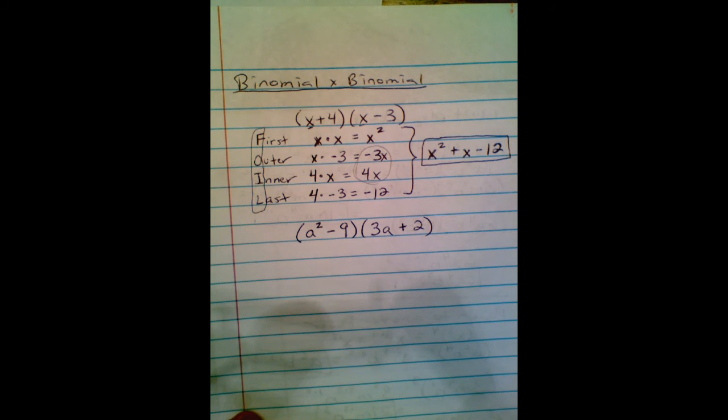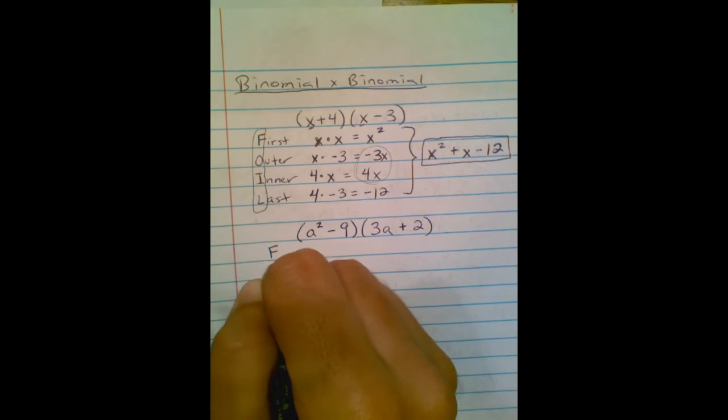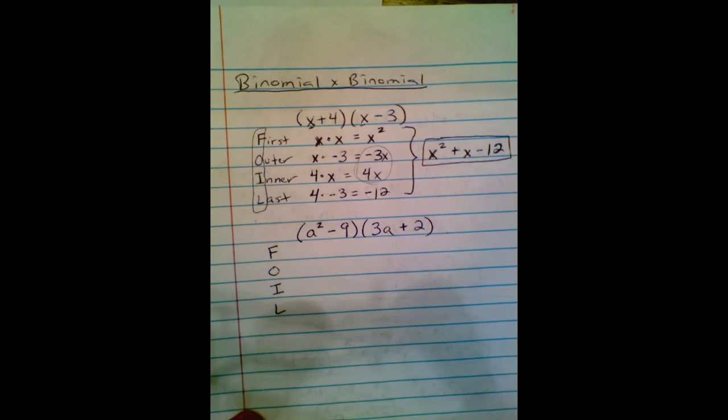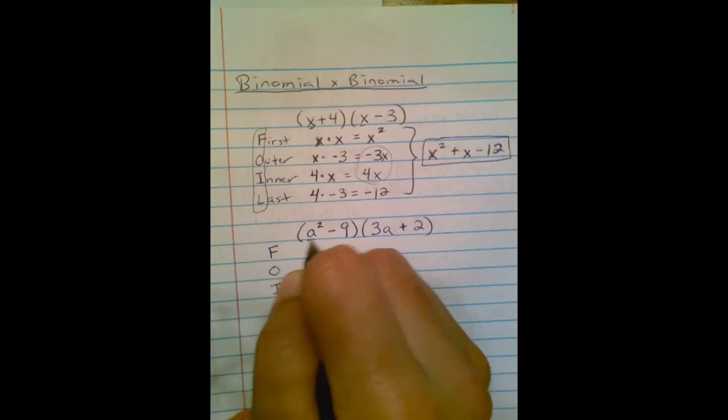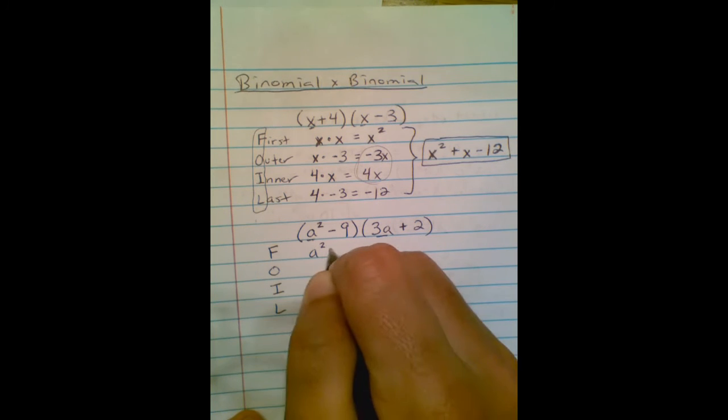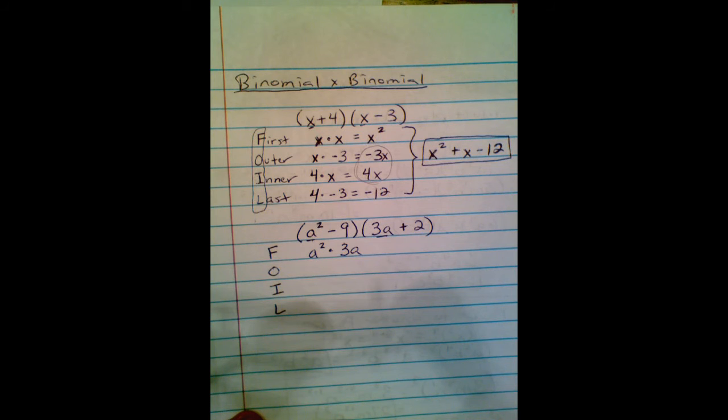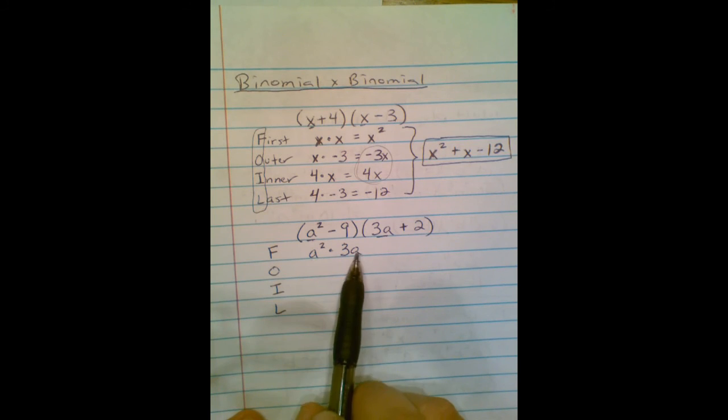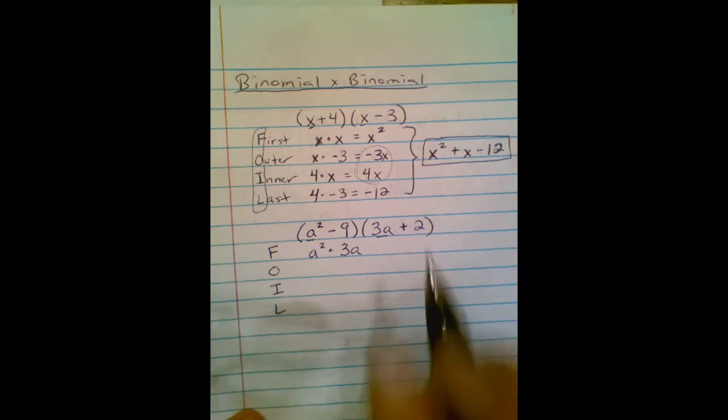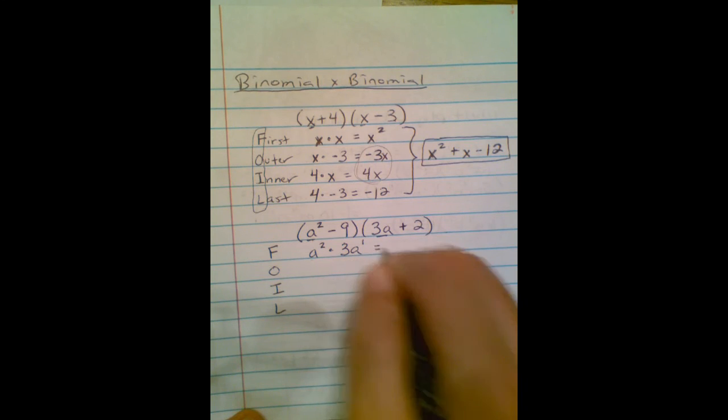I'm going to do it the first few times just so it's a nice easy pattern for you to remember. So F being the first - the first term in each parenthesis. So a² and 3a, that's the first term in each. A² times 3a. We're going to go back to our rules of exponents. We now have the same base written twice, so our rule was to add those exponents.